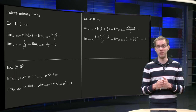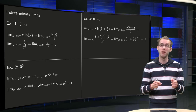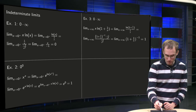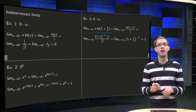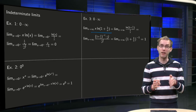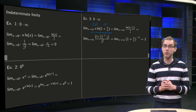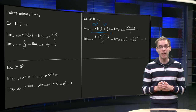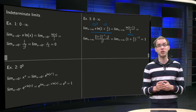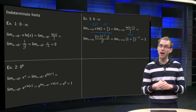Next we look at another 0 times infinity indeterminate limit: limit as x→∞ of x times ln(1 + 1/x). As x→∞, 1/x goes to 0, so we get ln(1) = 0, while x blows up. To handle this, we rewrite x as 1 over (1/x), giving ln(1 + 1/x) divided by (1/x). As x→∞, both numerator and denominator approach 0, so we have 0 over 0 and can apply L'Hôpital's Rule.